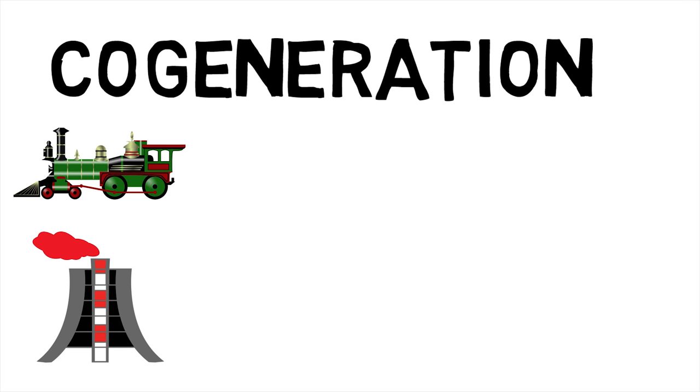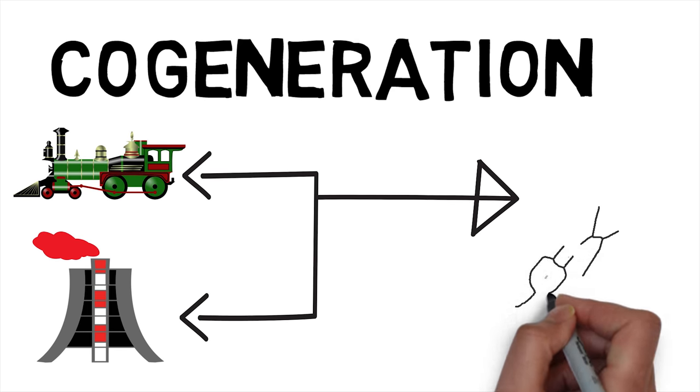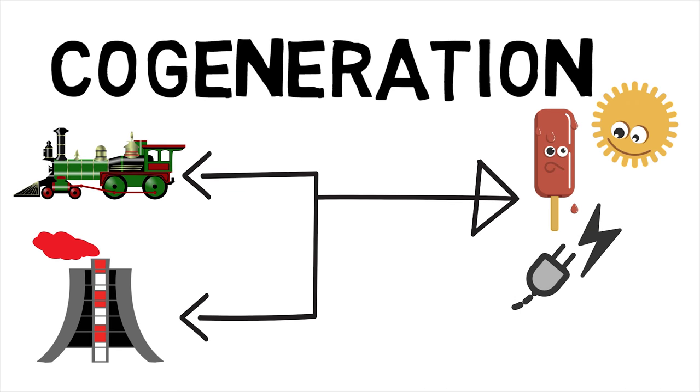Cogeneration or combined heat and power, CHP for short, is the use of a heat engine or power station to generate electricity and useful heat at the same time.